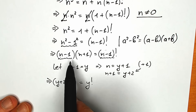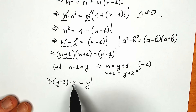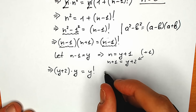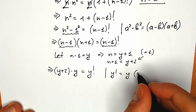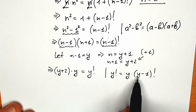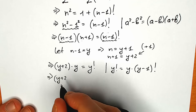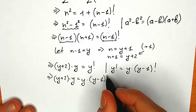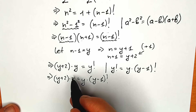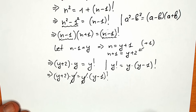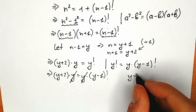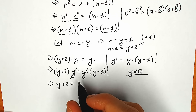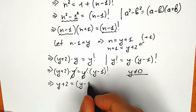Now, instead of y factorial, we use the same logic as before: y factorial equals y times (y−1) factorial. So our equation becomes (y+2) times y equal to y times (y−1) factorial. We can cancel y from both sides — noting that y is not equal to 0. As a result, we have y+2 equal to (y−1) factorial. Rearranging, (y−1) factorial minus y equals 2.